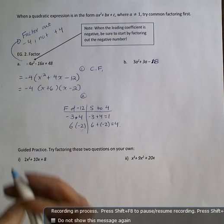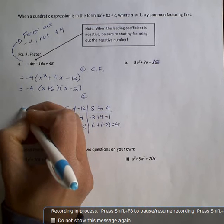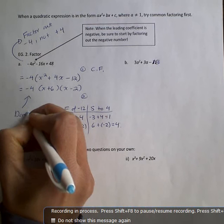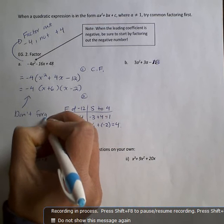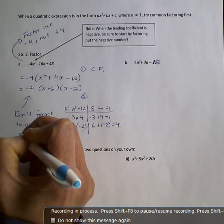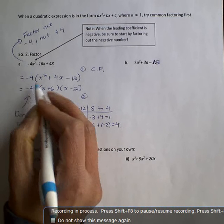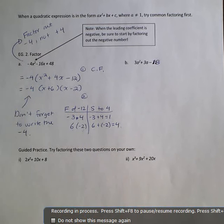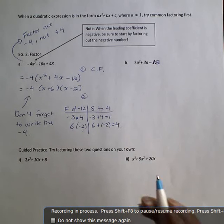So let's just write down a little tip here. Don't forget to write the negative 4. So whatever you have common factored out, don't forget to include this in every line. Otherwise, when you expand it out, it will not be the original question. You will not get the right answer. All right, let's do the next question.